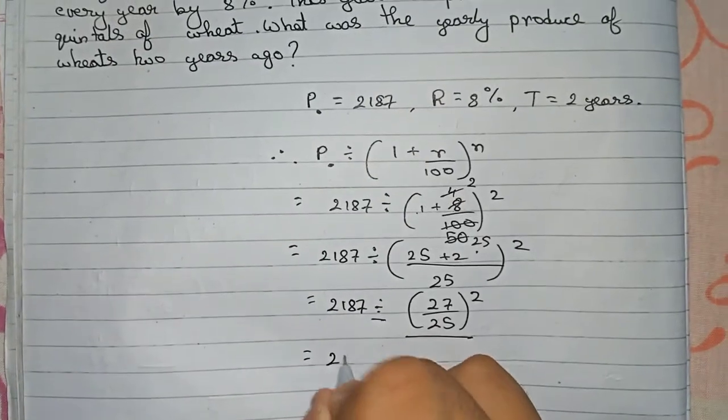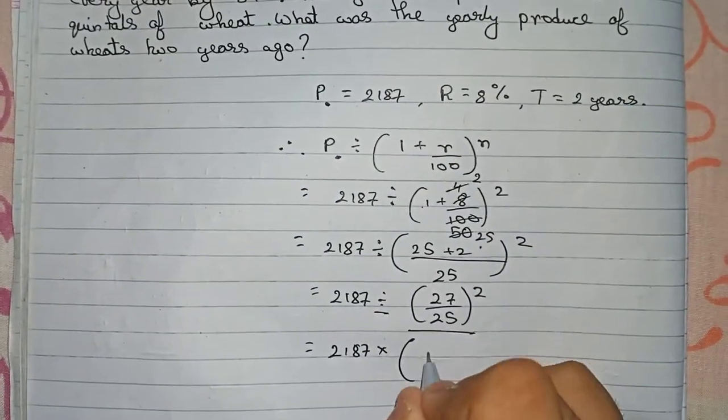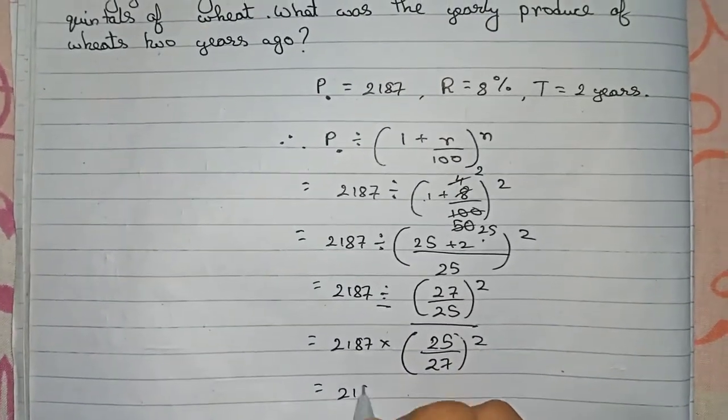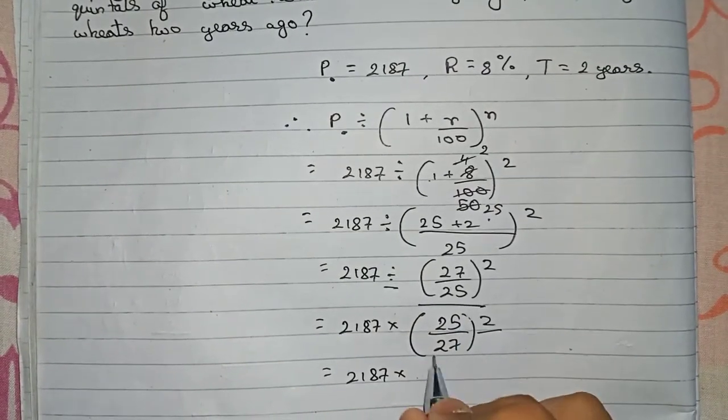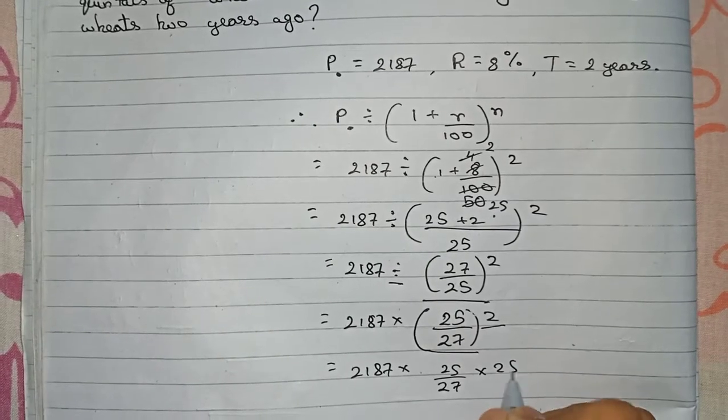So it becomes (25/27)². So 2187 into... Now we remove the square, so this number becomes two times: 25/27 times 25/27.